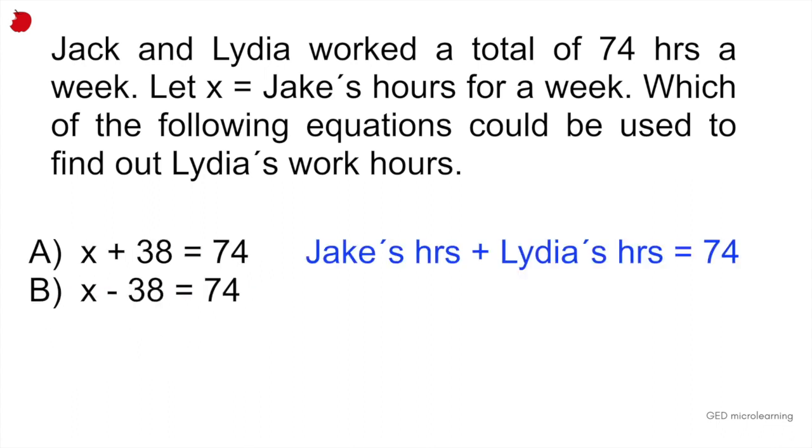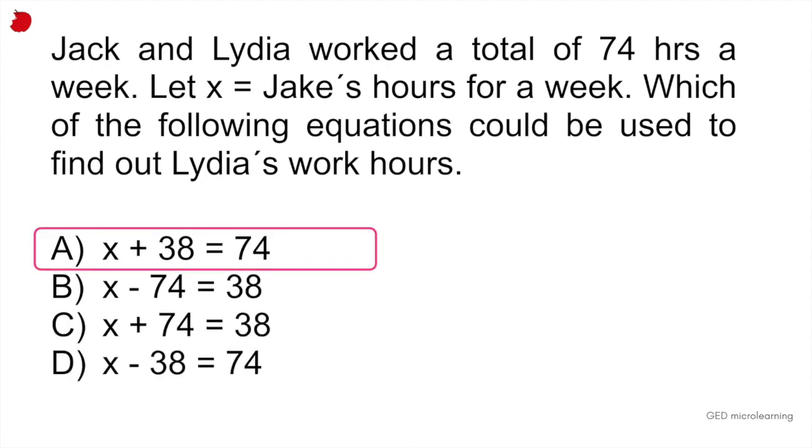Now you only have to deal with these two answers. And then the question is telling you that Jake and Lydia, so Jake plus Lydia's hours equals 74. So essentially, you have to just simply choose the first equation where you're adding. So X plus 38 is equal to 74. That would be the correct equation.